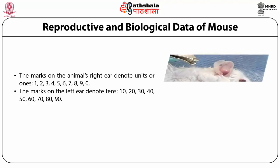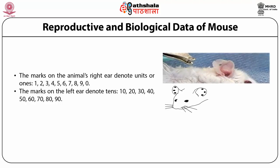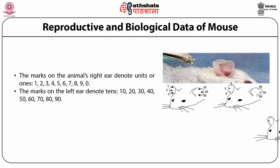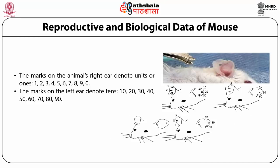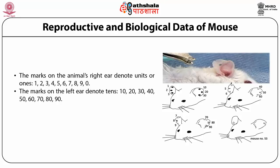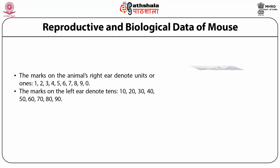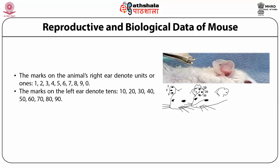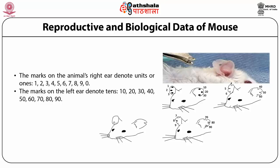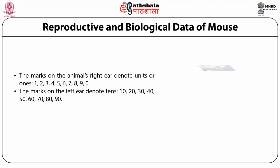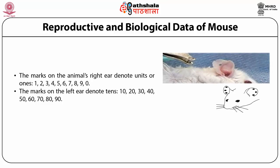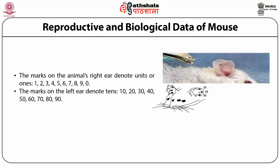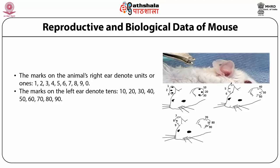Identification of the mouse plays an important role because when you are studying 4 to 5 animals with different drug regimens, you need to know which mouse received which dose and what the effect was. One method is ear marking; nowadays many tags and microchips are available for easy identification.